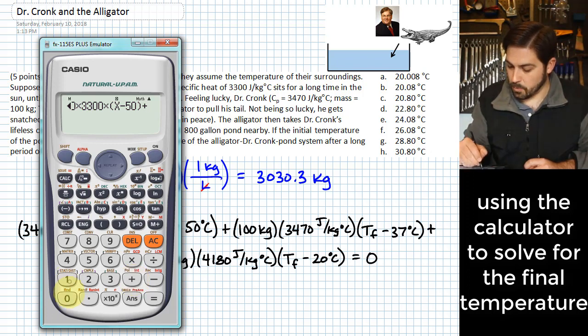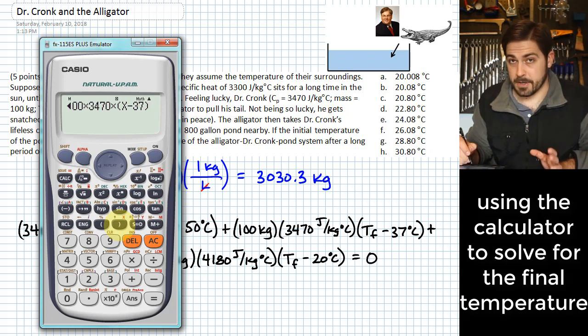To this, we are going to add 100 times 3470 times, again, we want that variable in there, x we're using, minus 37. And this takes care of that second term.